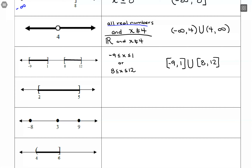This next one shows x between 2 and 5, including both endpoints, so 2 ≤ x ≤ 5. In interval notation, that's simply [2, 5] with square brackets on both sides.